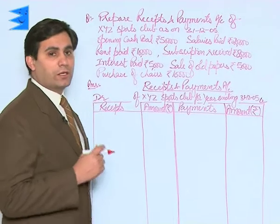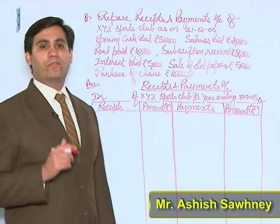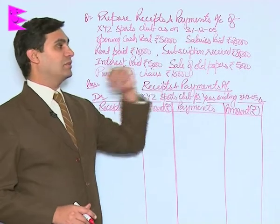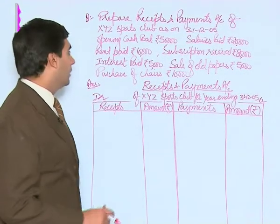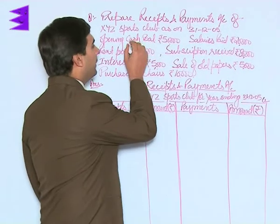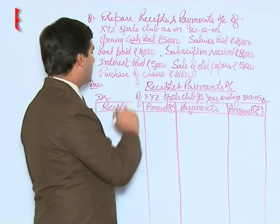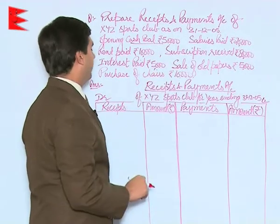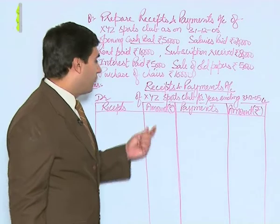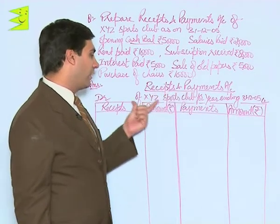In this question we are required to prepare the receipts and payments account of XYZ Sports Club as on 31st December 2005. The information given includes opening cash balance, salaries paid, rent paid, subscription received, interest paid, sale of old papers, and purchase of chairs. The format of the receipts and payments account goes like this.